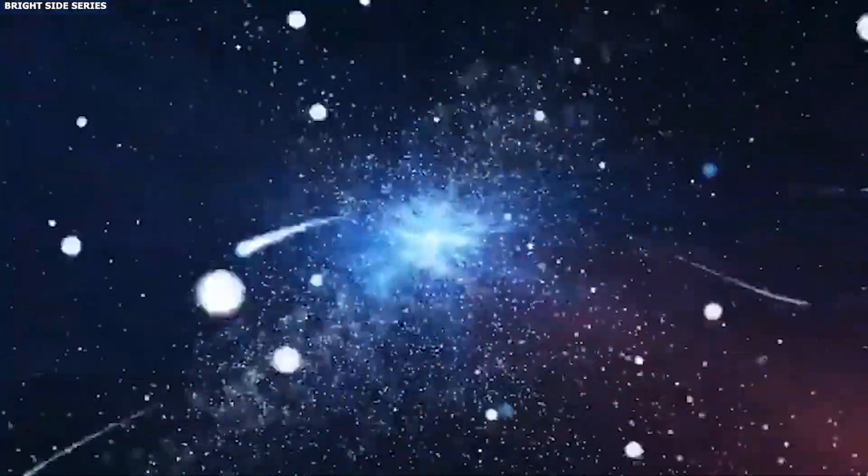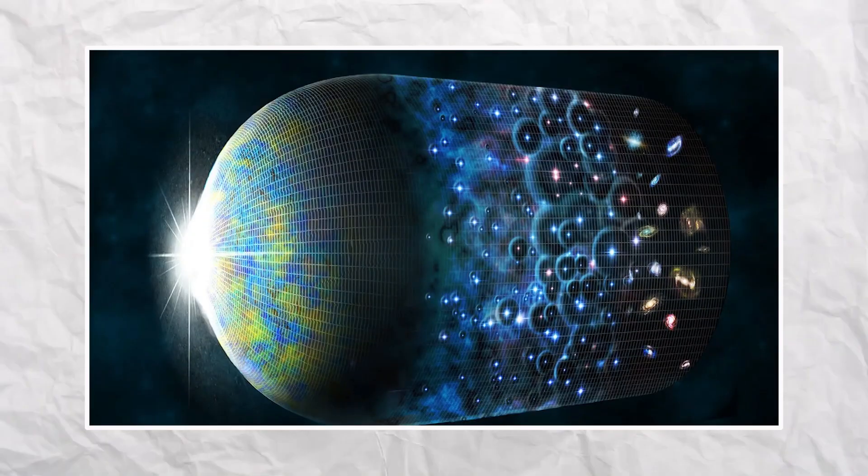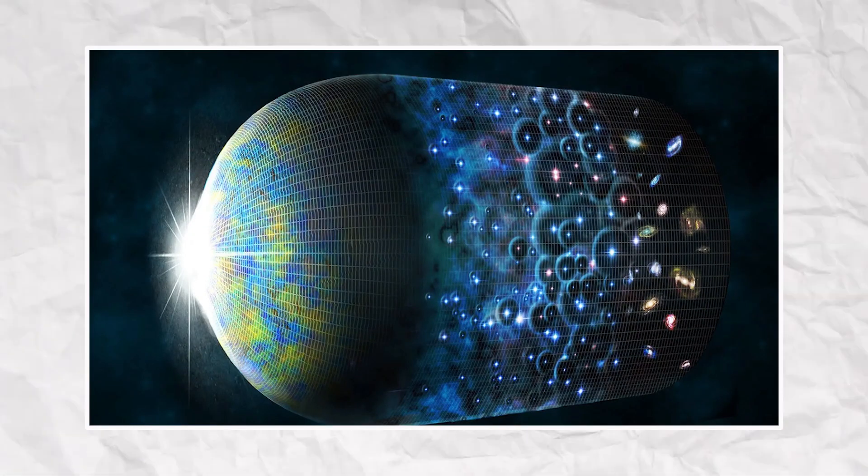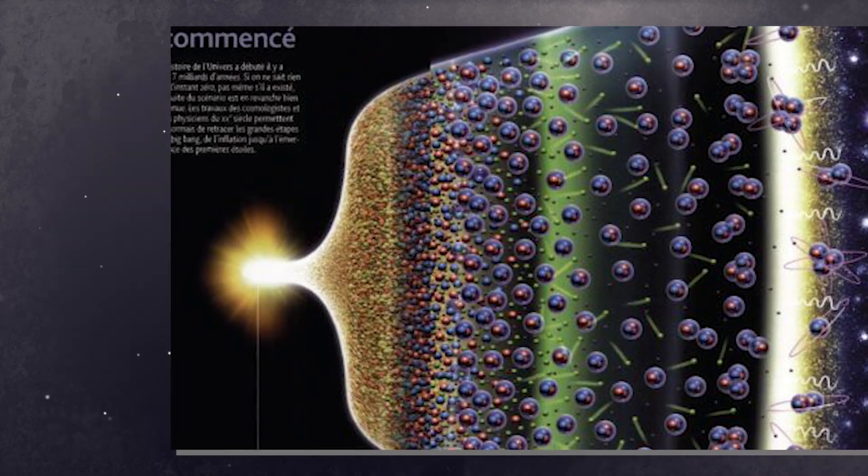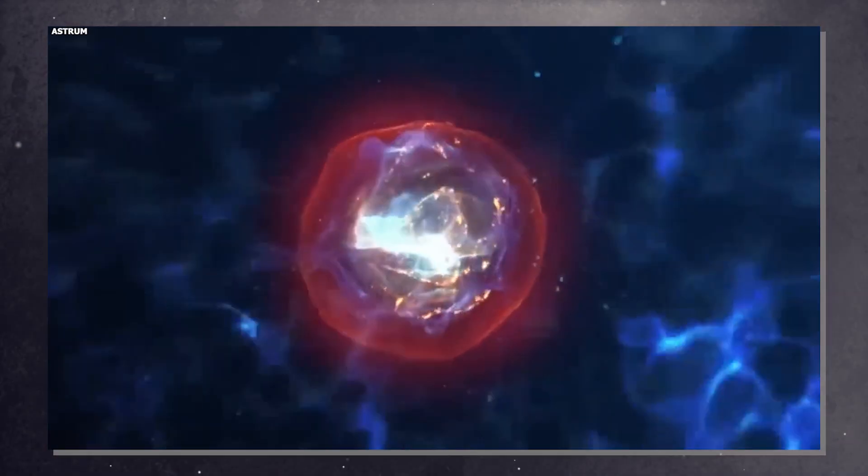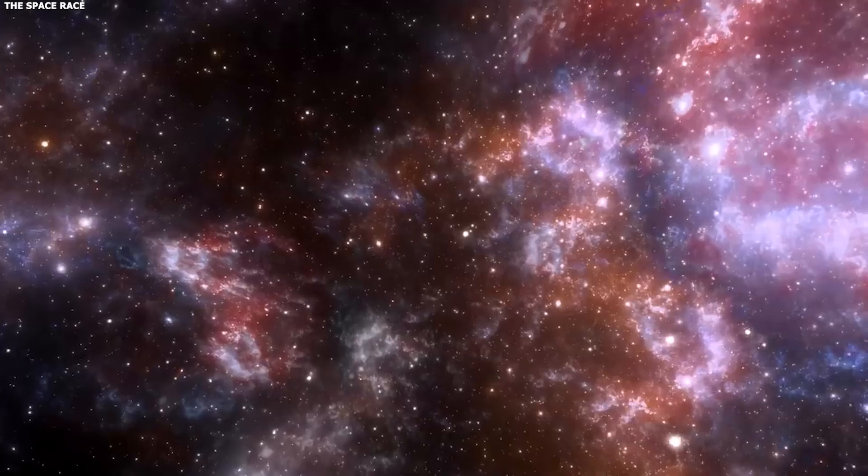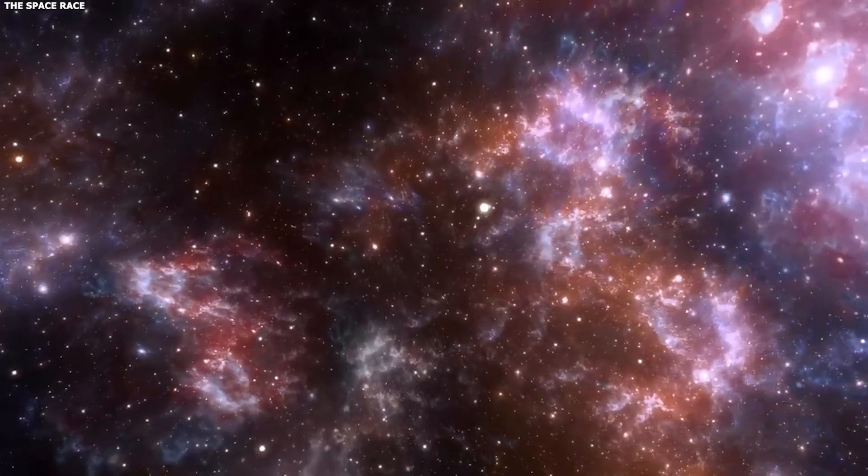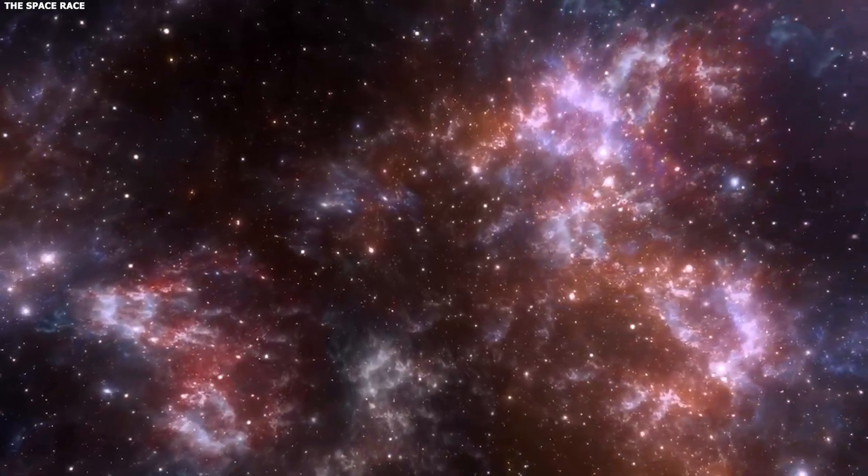Scientists have two main ways to measure this. Method one looks at the early universe, specifically the cosmic microwave background radiation left over from the Big Bang. By studying the patterns in this ancient light, you can calculate how fast the universe should be expanding today. The answer is about 67 kilometers per second per megaparsec.